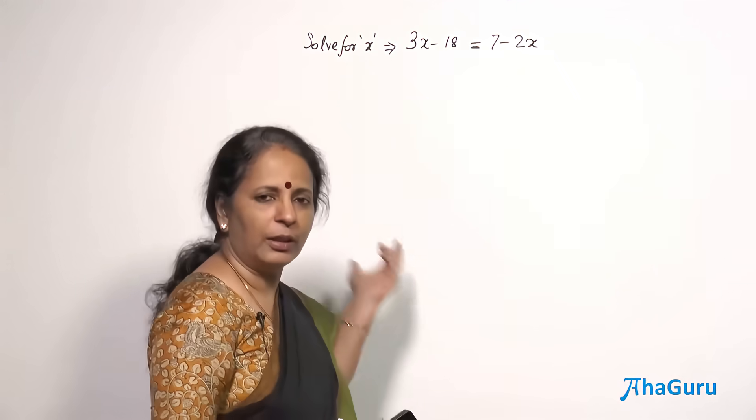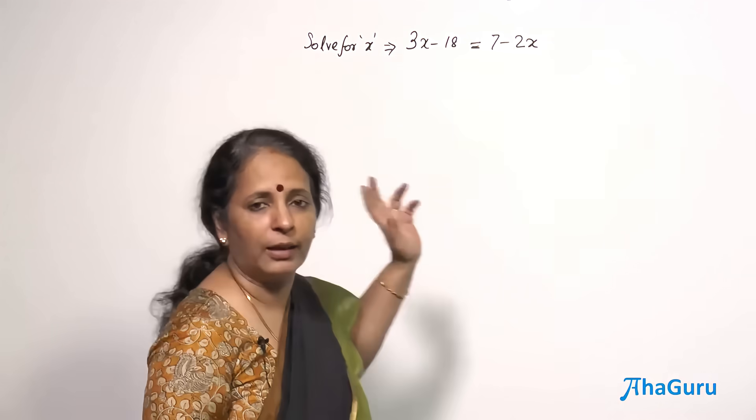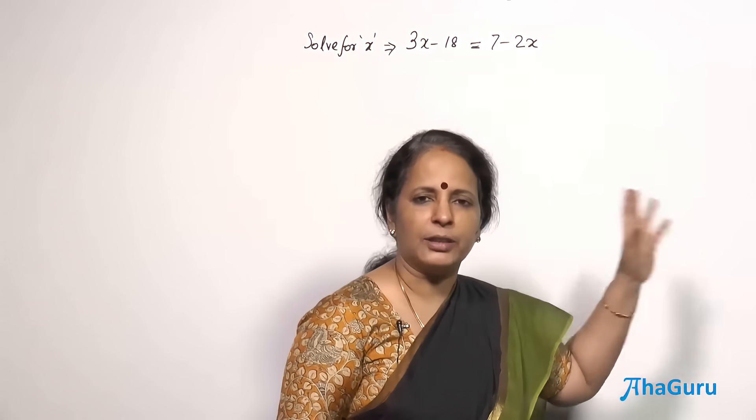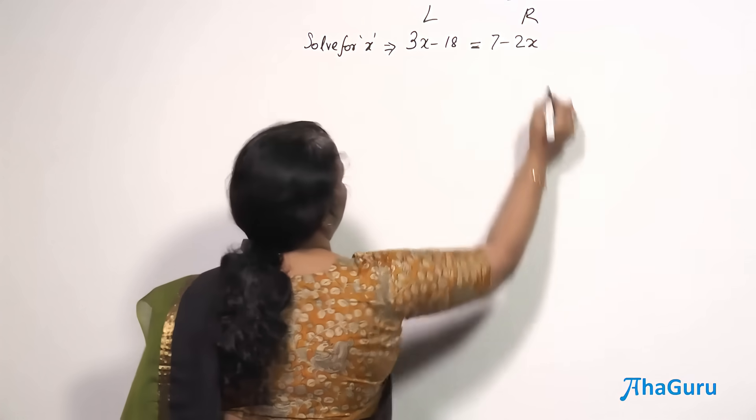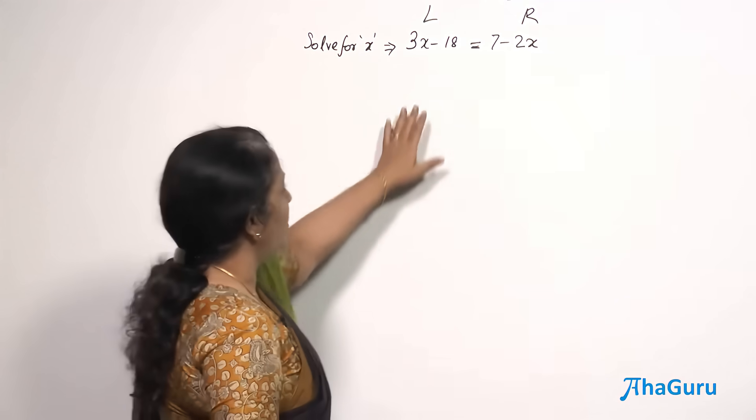So bring all the left terms to the left. All the terms which do not have this x to the right side, which is the constant term. So this is left and this is right.